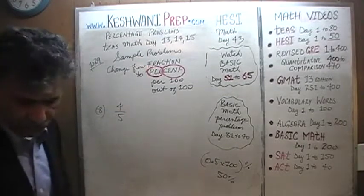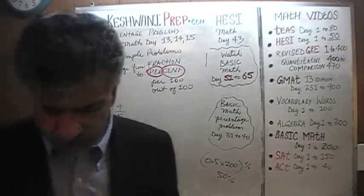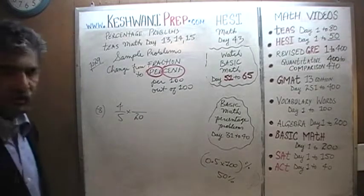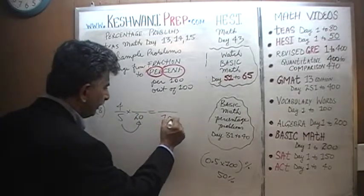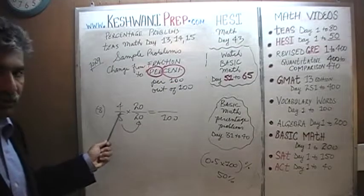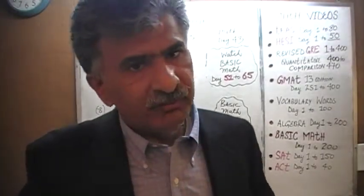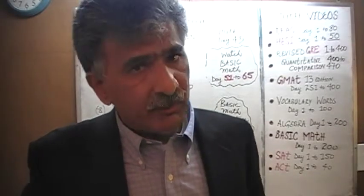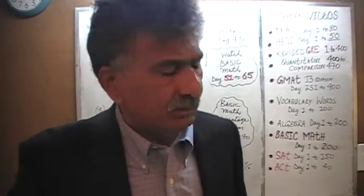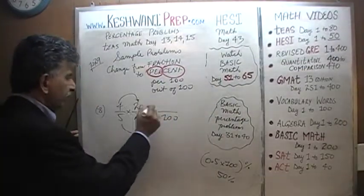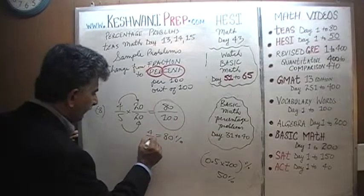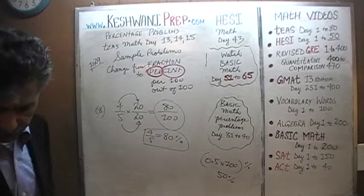The next one is four-fifths. How do I convert four-fifths into a percent? As long as I can get a hundred at the bottom, I'm home free. How can we convert the five into a hundred? Multiply it by twenty — five times twenty is one hundred. Since we multiply the bottom by twenty, we must multiply the top by twenty as well, so we don't change the value of four-fifths. Four times twenty is eighty, so 80 out of one hundred is eighty percent. Four-fifths is eighty percent.